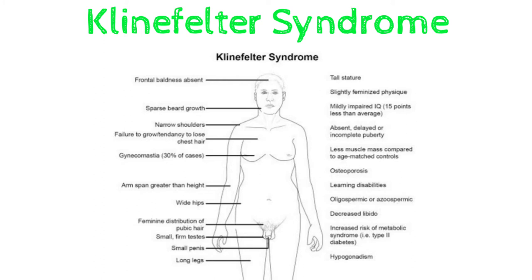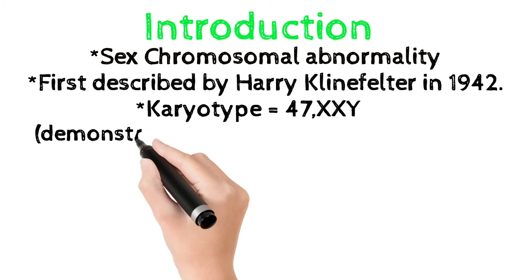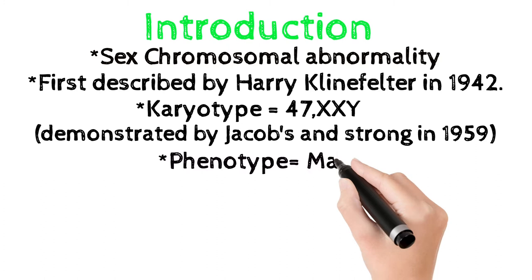It is a sex chromosomal abnormality, first described by Harry Klinefelter in 1942. But karyotype 47XXY was demonstrated by Jacobs and Strong in 1959.